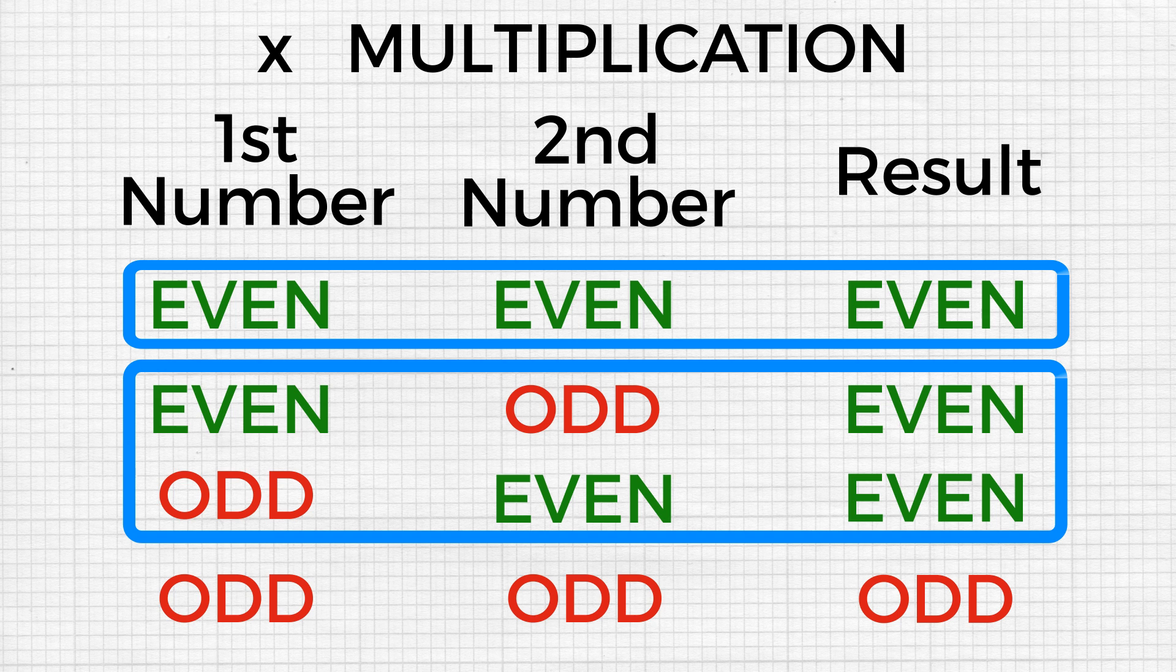The only case when in multiplication you will get an odd number is when both the original numbers are odd. That is, the first number is also odd, the second number is also odd, the result will also be odd.